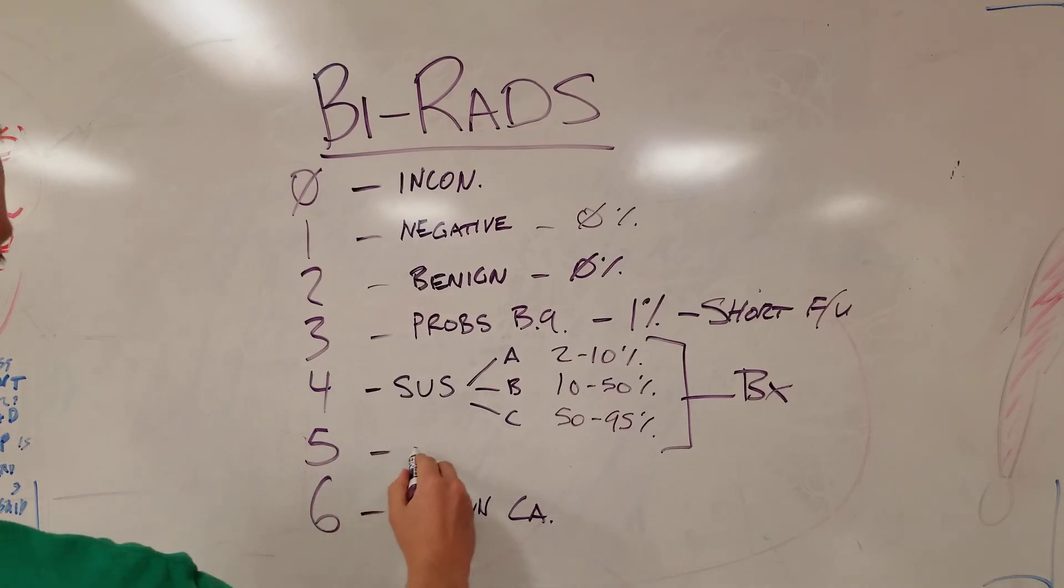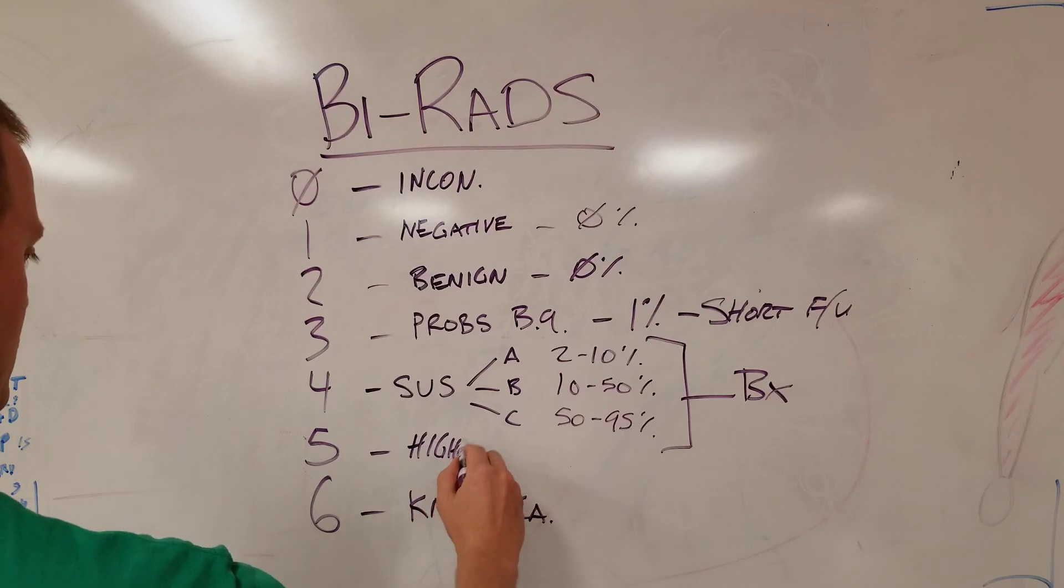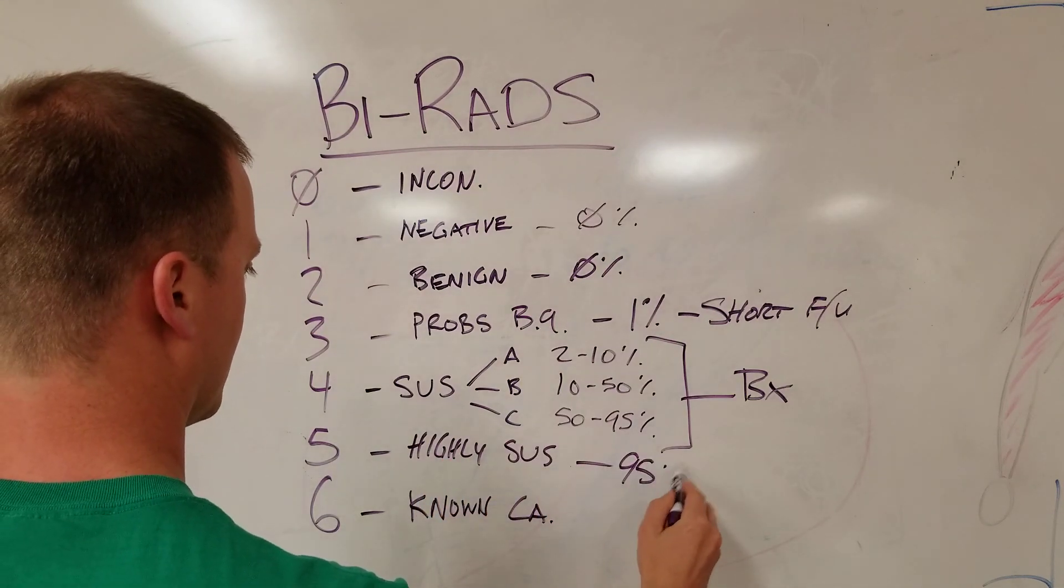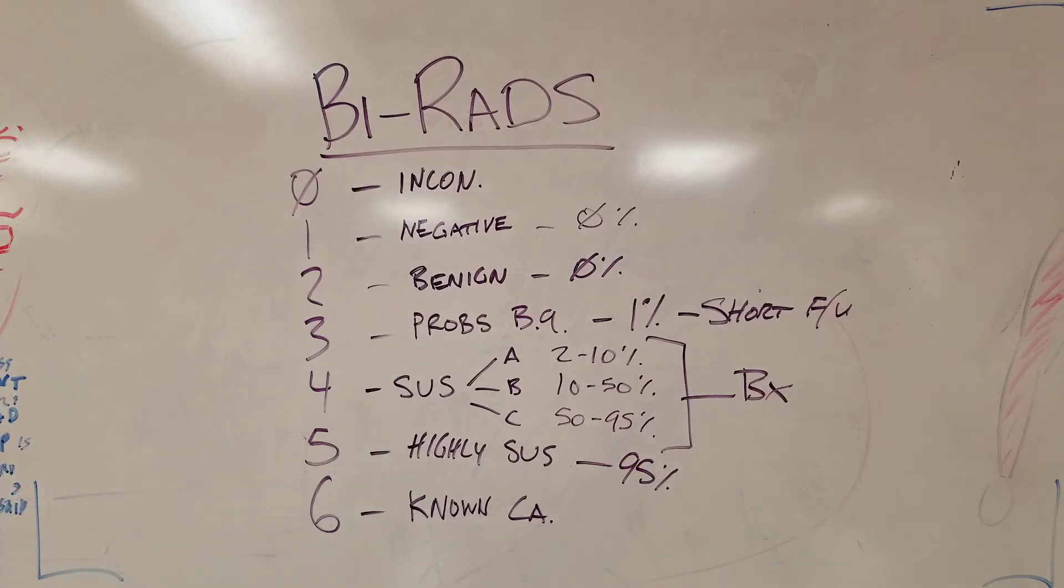And then five is highly suspicious, and that's 95 percent cancer risk. This is highly suspicious. It's pretty much cancer until proven otherwise, and then you can see your BI-RADS lesion.